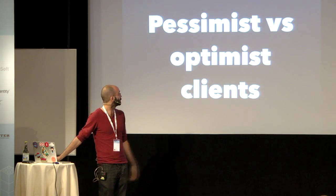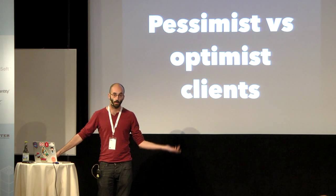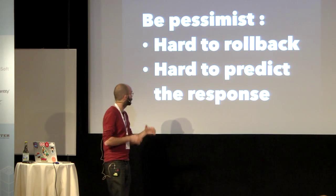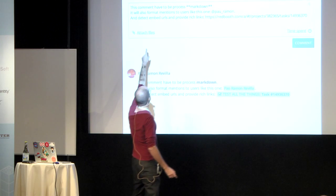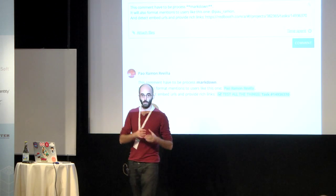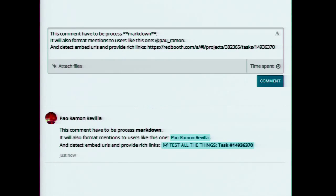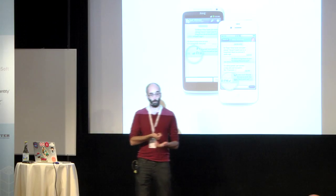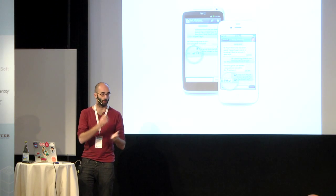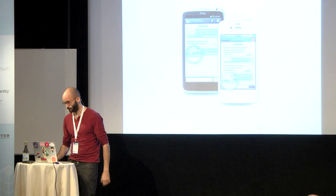Another thing is perceived speed — whether you want to make your client optimistic or pessimistic. I recommend being pessimist if it's hard to roll back or hard to predict the response. In our case, we have to format comments, format markdown, handle mentions — this is hard to do on the client, so when you send a comment we just wait and show it when the response comes back. But if it's not hard, be optimistic. A good example is WhatsApp — no one would say WhatsApp is slow, but it might be. When you send a message, it shows as sent immediately with a tick and double tick, and only shows an error if something went wrong.